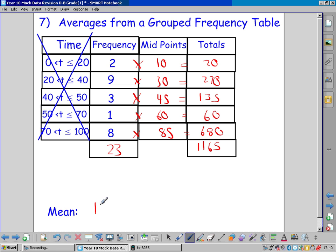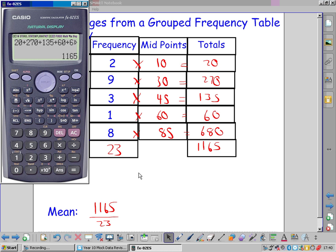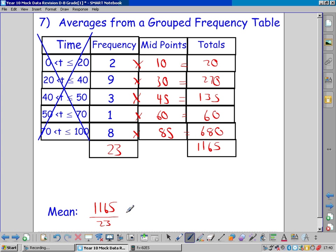So the mean, the estimated mean, is 1165 divided by 23. It would probably be a decimal. 50.7 to one decimal place.